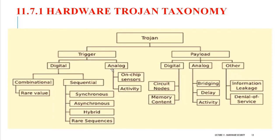Moving on to analog — in analog, you are having some sensors, on-chip sensors, and activity. So there are a lot of different types of triggers available: digital triggers and analog triggers. In digital triggers, we have combinational and sequential. In sequential: synchronous, asynchronous, hybrid, rare sequences. In combinational: rare value. For analog signals, we have on-chip sensors and activities.